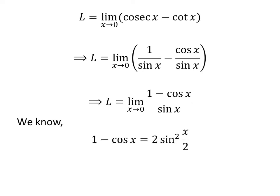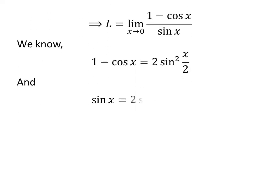We know 1 minus cosine of x is equal to 2 times the square of sin of half of x. We also know sin of x is equal to 2 times sin of half of x times cosine of half of x. The verification of these trigonometric identities is given in the video in the upper right corner, and the links are also in the description.